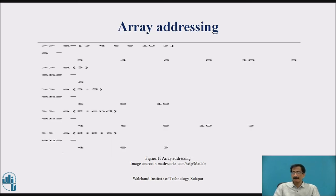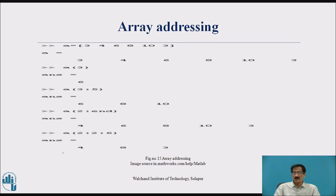Array addressing. The elements of an array are written inside rectangular brackets with a space or comma. Given A = [3, 4, 6, 8, 10, 3], the command A(3) gives answer 3 because the third element of A is 3. A(3:5) will give the elements from the 3rd to 5th position: 6, 8. A(2:2:6) will display elements from 2nd to 6th position with a difference of 2.